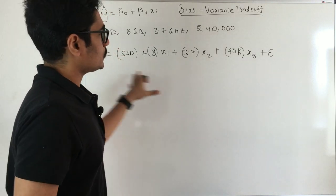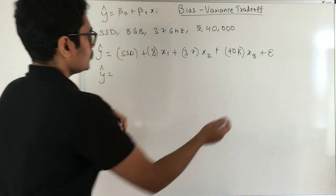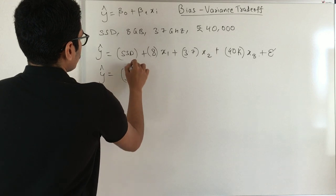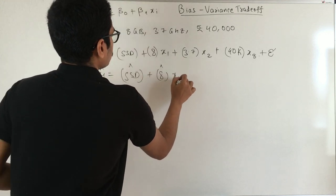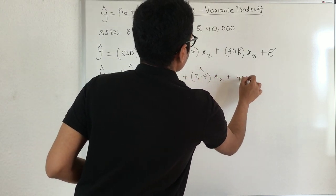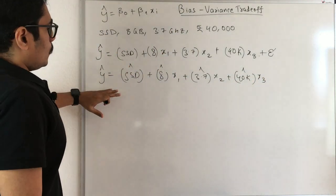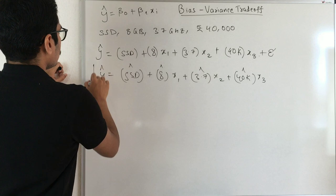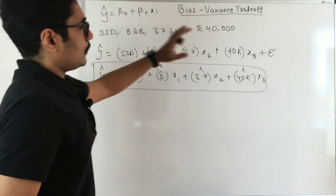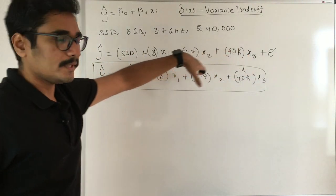What I do is I will have an estimate of all these things. I'll now eliminate the error in the next step and say I have SSD cap plus this this cap something something. This is the estimated one that I'm now writing. My error in this case won't be there. This is my new prediction.